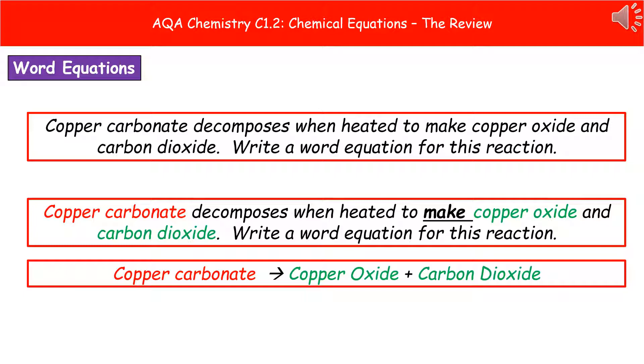To give you an idea of the kind of question we could see on the exam paper to do with our word equations, I've given you one here. So copper carbonate decomposes when heated to make copper oxide and carbon dioxide. Write a word equation for this reaction. First thing we're going to do is highlight, circle, underline, whatever you have handy or you like doing, the key bits of information there. So you can see what I've done there is I've underlined and made bold the word make, because that's telling us what we're actually making. So before that, we've got the red bit, which is copper carbonate, that's going to be our reactant. And anything after the make is the product. So we've got copper oxide and carbon dioxide in green.